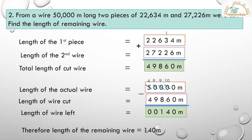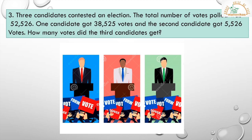Only 140 meters was remaining. Let's solve the third problem. Three candidates contested an election. The total number of votes polled was 52,526. One candidate got 38,525 votes and the second candidate got 5,526 votes. How many votes did the third candidate get? We are adding both candidates' votes and then subtracting from the total to get the third candidate's votes.